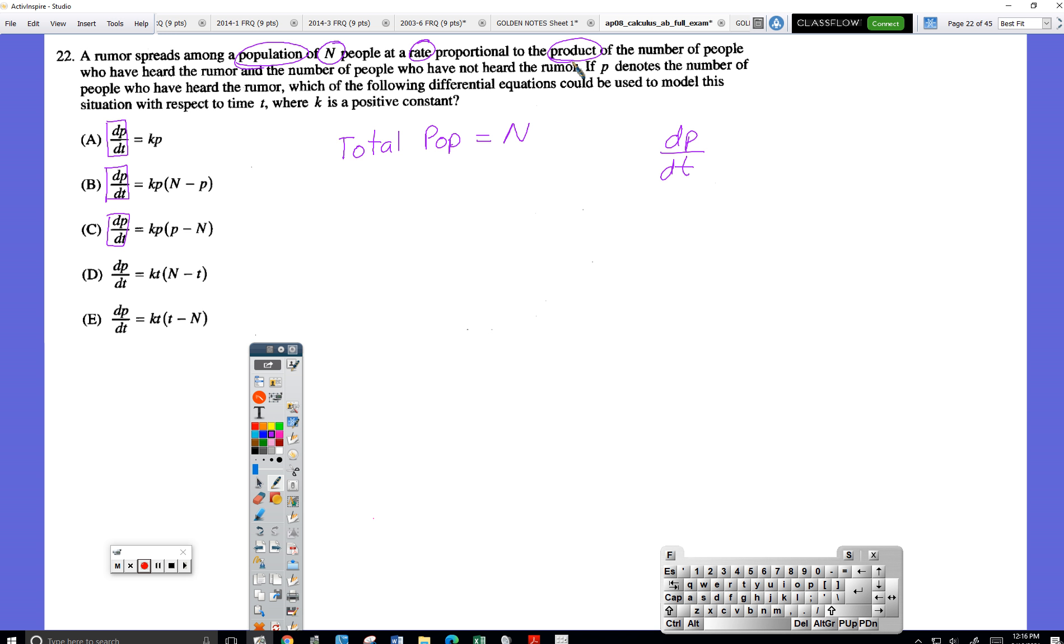Product of the number of people who have heard the rumor and number of people who have not heard the rumor. Wow. P is the number who have heard the rumor.